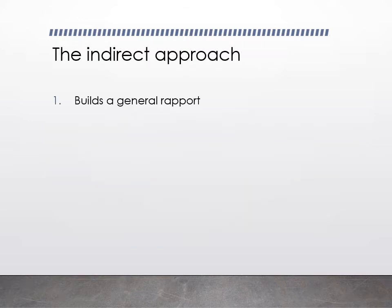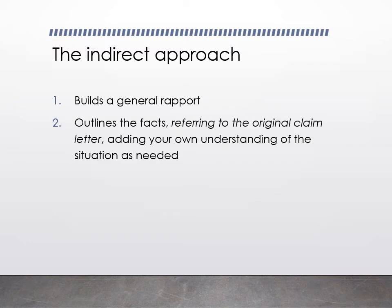To do all these things, you're going to use an indirect organizational approach. In this letter, that's going to look like beginning with general rapport — perhaps noting how long they've been a customer, how much you appreciate them. You want to open by being nice and extending a hand of friendship. Then you also want to outline the facts, referring to their original claim letter.